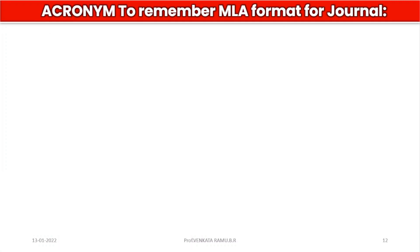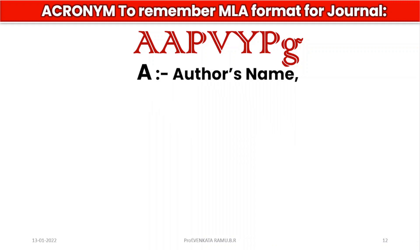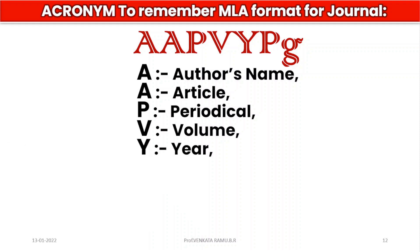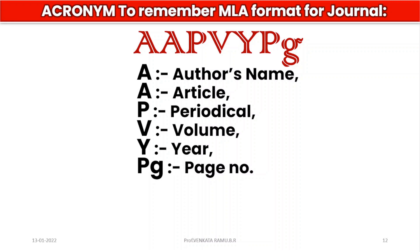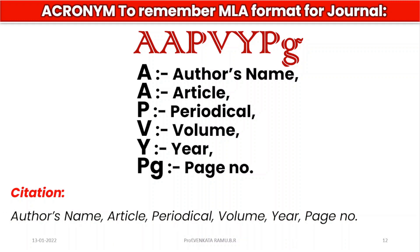Let me tell you the acronym so that you could easily remember the MLA format for a journal or periodical. It is AAPVYPG. A stands for author's name, another A stands for article, P stands for name of the periodical, V stands for volume, Y stands for year of publication, and PG stands for page number. With this acronym you can easily remember the citation technique.